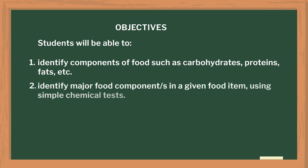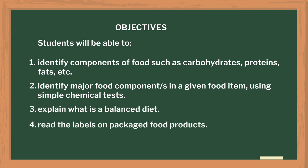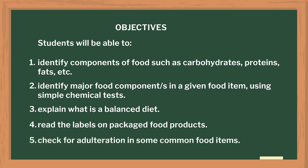They will be able to identify the food components present in food items using simple standard chemical tests. Thirdly, they will know what a balanced diet is. They will also be able to read the labels of food products and identify some common adulteration in food.